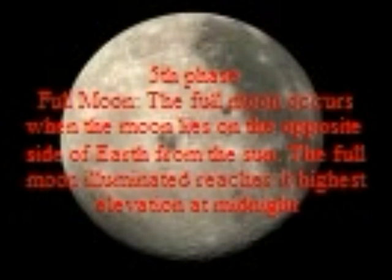The full moon occurs when the moon lies on the opposite side of the Earth from the sun. The full moon is fully illuminated and reaches its highest elevation at midnight.